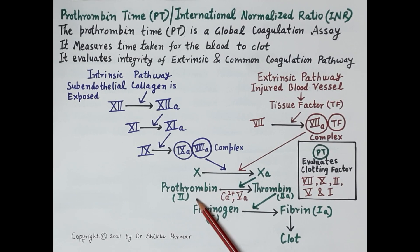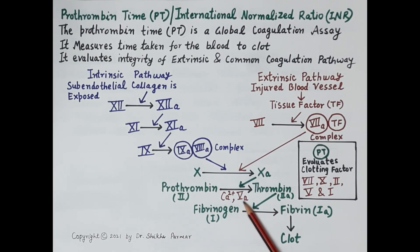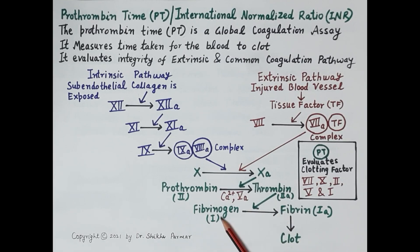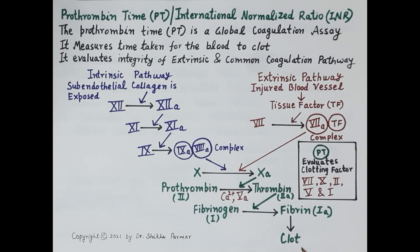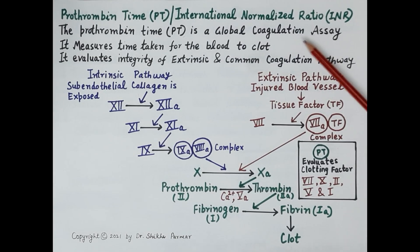Factor 10a is responsible for the activation of prothrombin to thrombin in the presence of calcium and clotting factor 5a. Thrombin then activates fibrinogen to fibrin, and finally a fibrin mesh network is produced in which platelets and other blood cells are entangled, resulting in the formation of a clot.